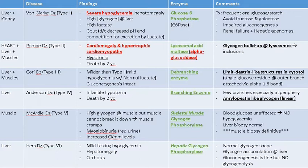For Von Gierke's disease, Type 1 glycogen storage disease, the enzyme deficiency is glucose-6-phosphatase. This enzyme is the very last one responsible for the dephosphorylation of glucose-6-phosphate into glucose — it removes the phosphate to liberate glucose. Glucose is phosphorylated to trap it in the cell and commit it to the glycolysis pathway, so if you cannot remove that phosphate, you cannot release glucose from the cell.